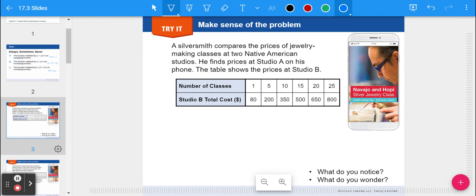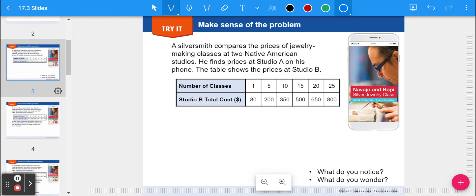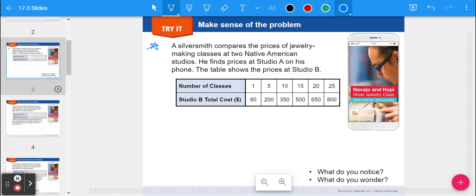Now, we're going to look at some functions that could be increasing or decreasing, and we're going to look at specific values or different spots in time. So today's problem of the day, why don't you read this through along with me. It says a silversmith compares the prices of jewelry making classes at two Native American studios. You find Studio A on his phone, and table B shows the number of classes and then the total cost. What do you notice about these? What do you wonder?